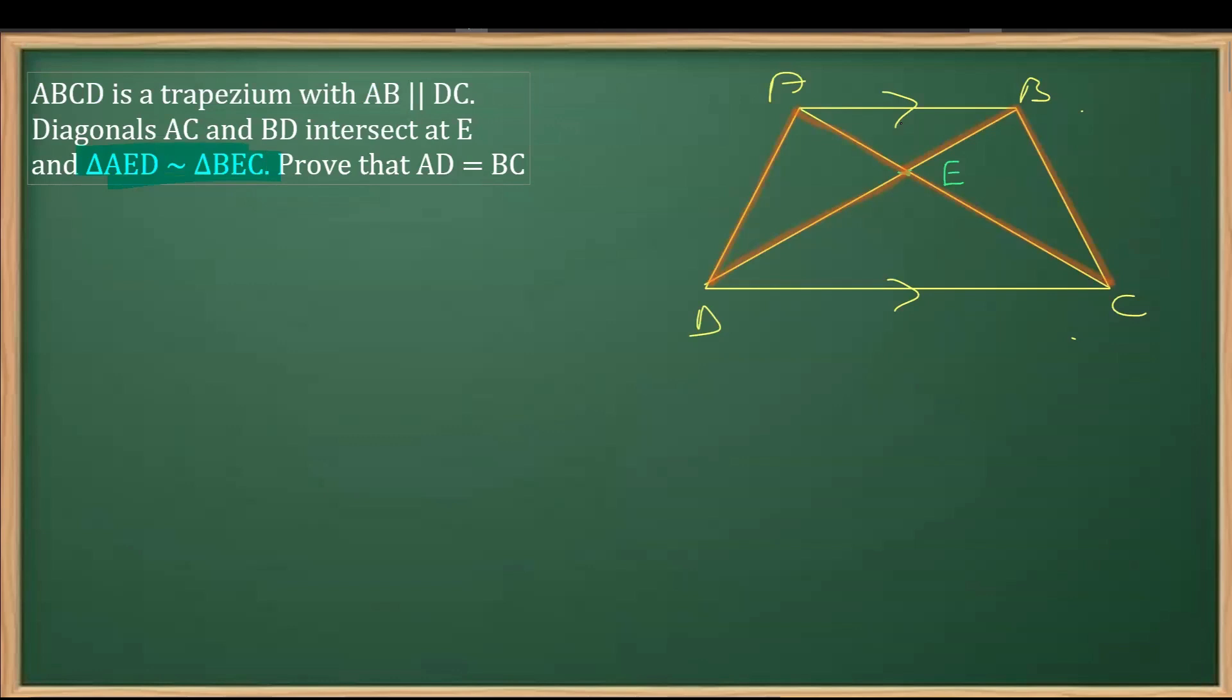First, let's use the information that these two triangles are similar. From here we can use proportionality. When two triangles are similar, their sides are proportional. So AE over BE equals ED over EC equals AD over BC. This is our first proportionality.